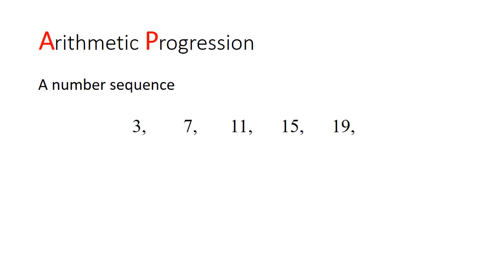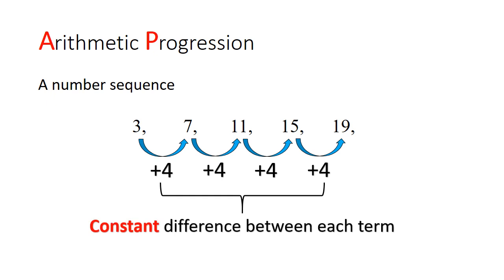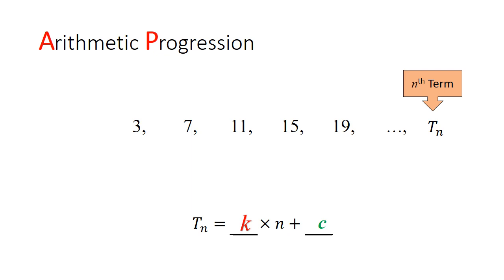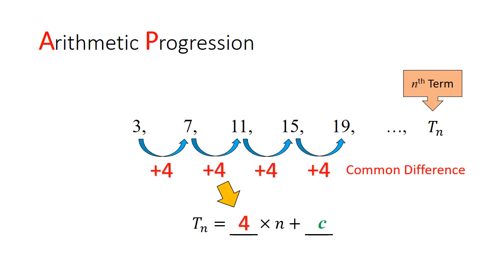Let's look at one such number sequence. This example shows an arithmetic progression. Notice that the difference between each term is a constant. Each number in this sequence is also known as a term, starting from the first term. And we call the end term the general term. We can express the general term in the form of kn plus c. k represents the common difference, which is plus 4 in this case, while c represents the zeroth term, which is negative 1.